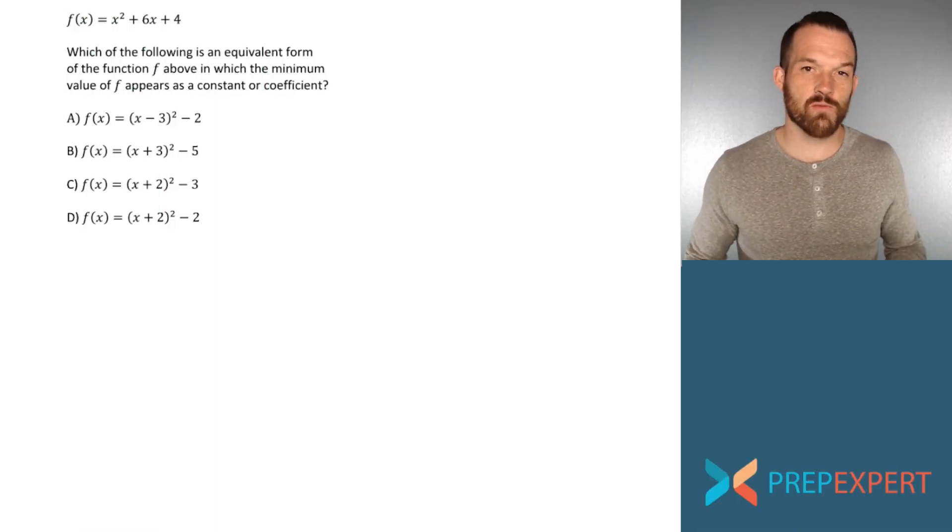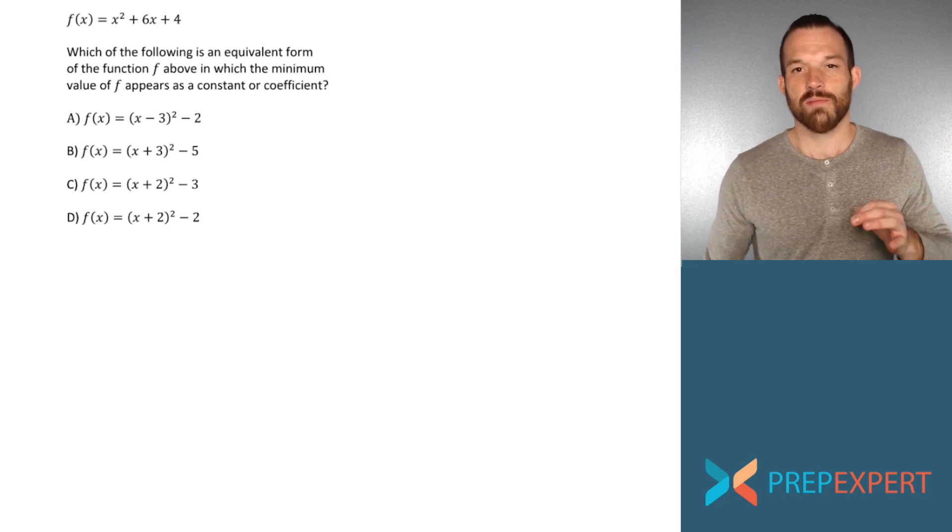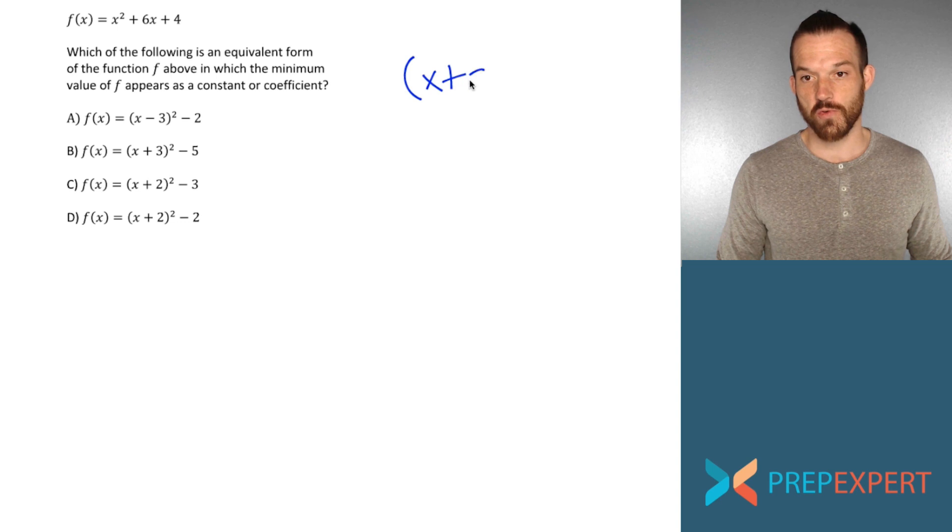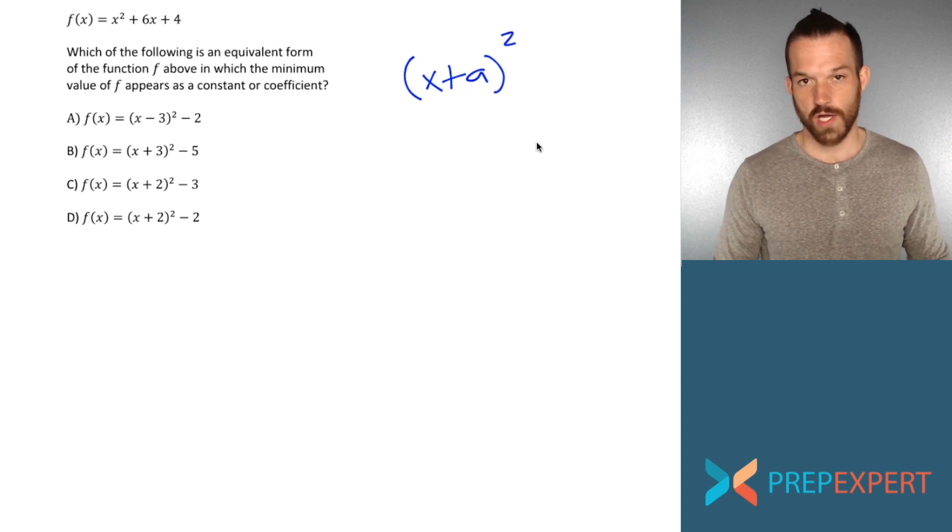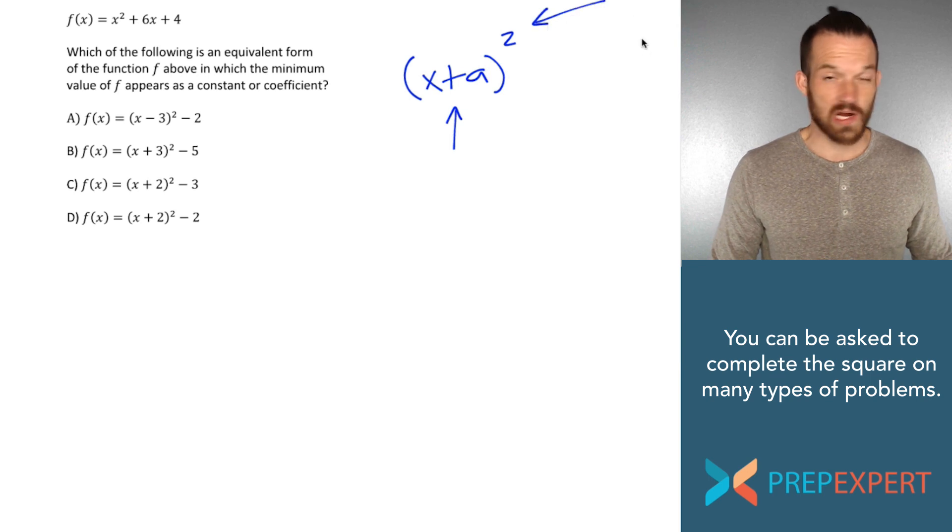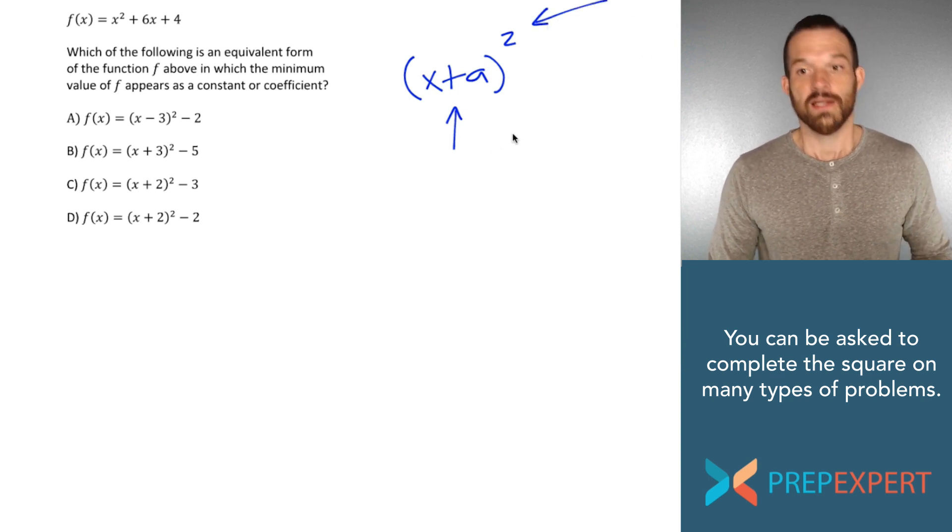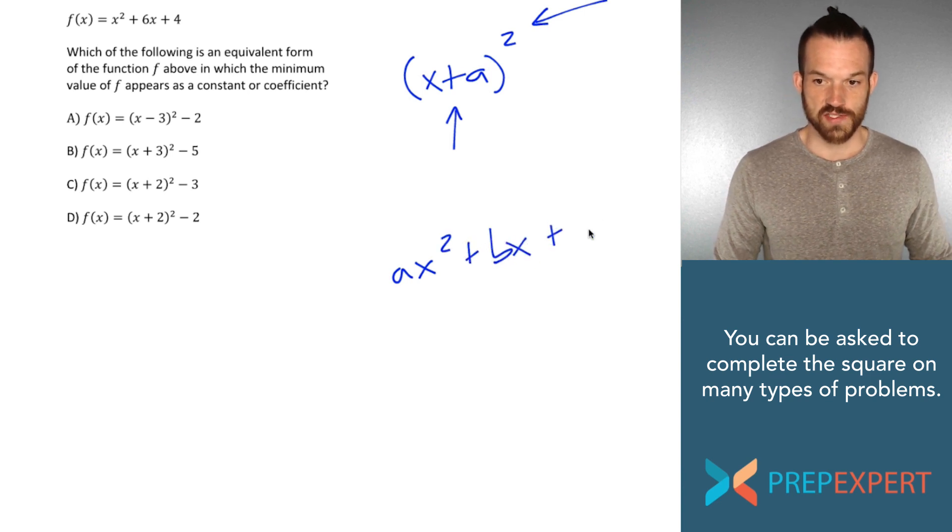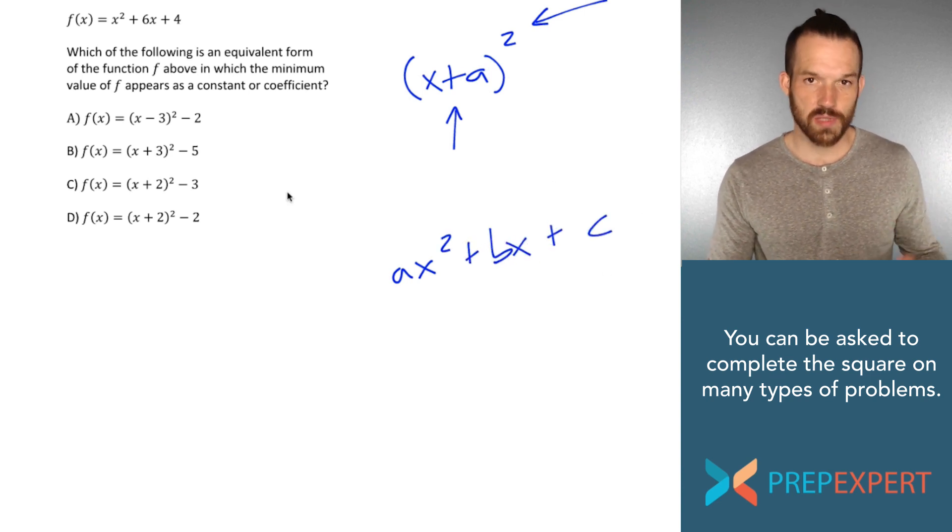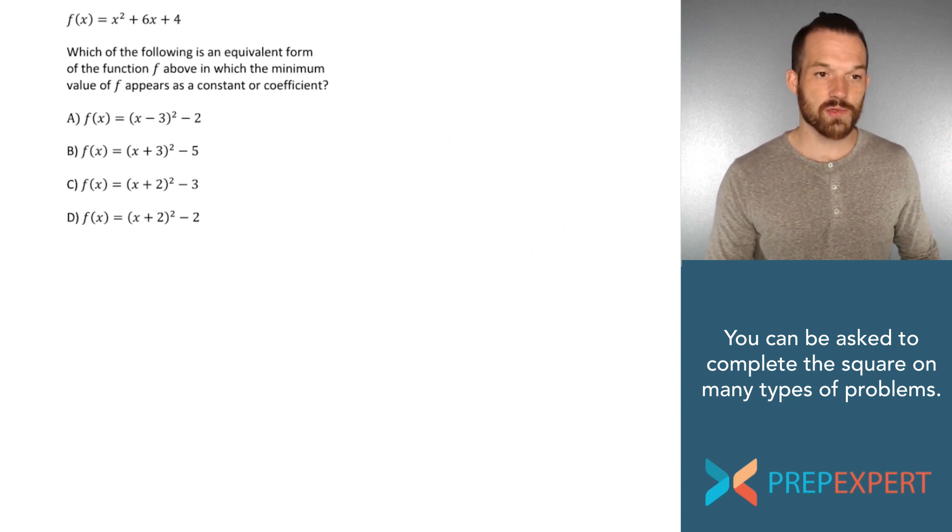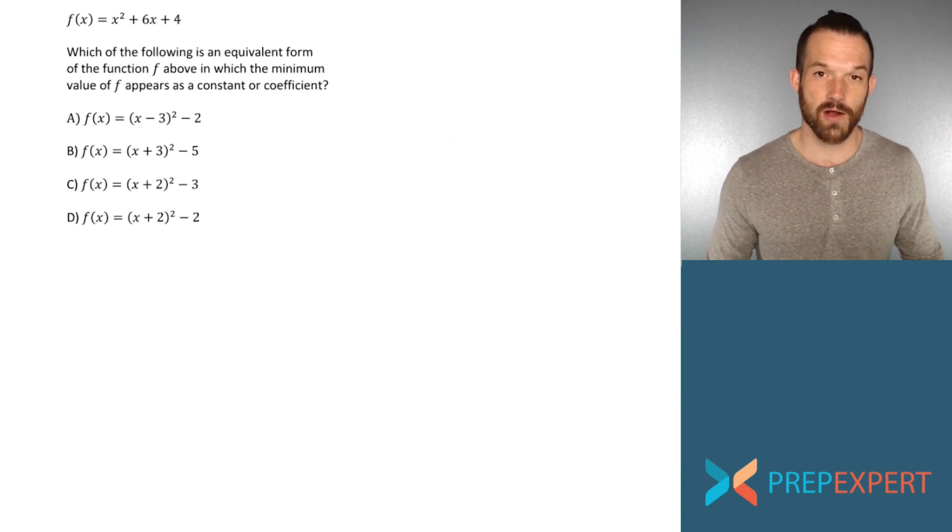Completing the square is the name we give to the process by which we create a binomial quantity squared from a normal quadratic. So here we have a binomial that is quantity squared, the whole binomial is squared. And if we need to create that from a regular quadratic, like ax squared plus bx plus c, we have to use a process called completing the square. And here on this page, you can see a typical problem that will require you to complete the square on the SAT.